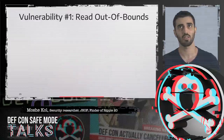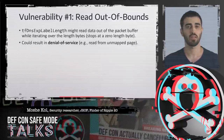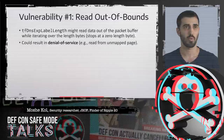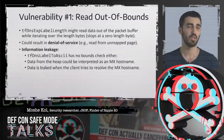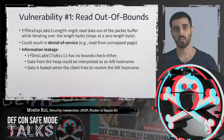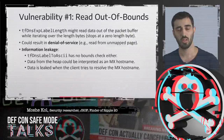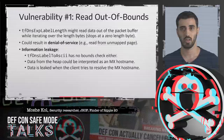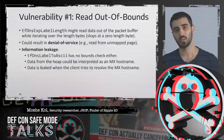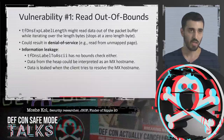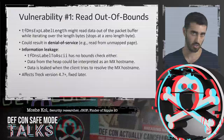This led us to the first vulnerability: a read-out-of-bounds vulnerability. This could result in a denial of service, but more interestingly, we can cause an information leakage vulnerability. The tfdns_label_to_ASCII function has no bounds checks either, meaning data from the heap could be interpreted as an MX hostname. This MX hostname is later resolved by the client in an attempt to get an IP address. So we can leak data from the heap inside the MX hostname itself in the query. This vulnerability affects Trek version at least 4.7 and was fixed in later versions, though the vulnerability still affects devices in the wild due to the complex supply chain and the nature of embedded devices.